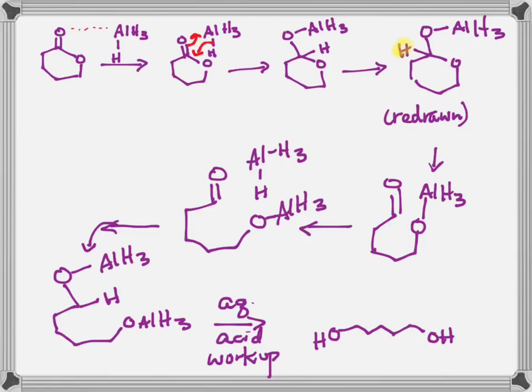This step involves the formation of the carbon-oxygen double bond and the formation of a bond between the aluminum and the oxygen to give us this aldehyde where the alcohol part of the lactone is no longer bonded to the carbonyl carbon.